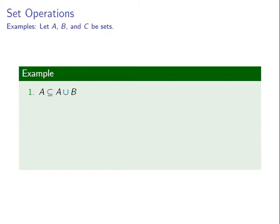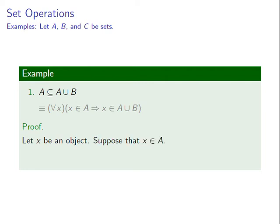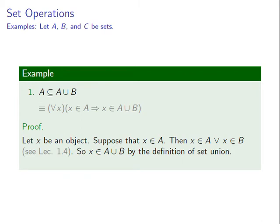Let us now prove statements involving the concepts of set union and intersection. For our first example, consider the claim: A is a subset of A union B. To prove this we need to show the equivalent quantified statement, that for any object x, if x is an element of A then x is an element of A union B. For the proof, let x be an arbitrary object. Suppose that x is an element of A. Then by one of the inference rules discussed in Lecture 1.4, it follows that either x is in A or x is in B, so x is an element of A union B by the definition of set union. Thus A is a subset of A union B.